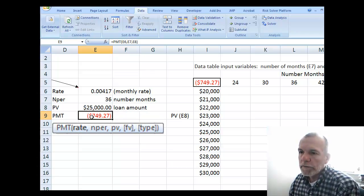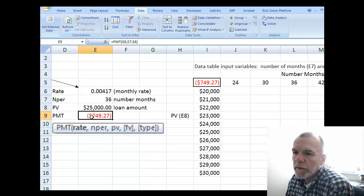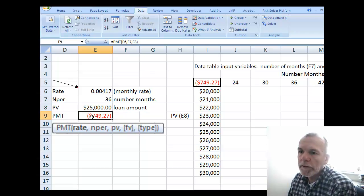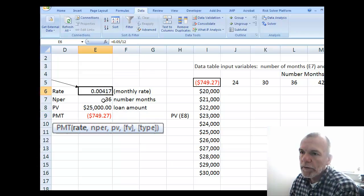Here's our model. We're finding the payment amount for a loan based on a particular rate, number of periods, and present value. You can see the payment function reported here in cell E9, and it's a function of E6 (the rate), E7 (the number of periods), and E8 (the present value).